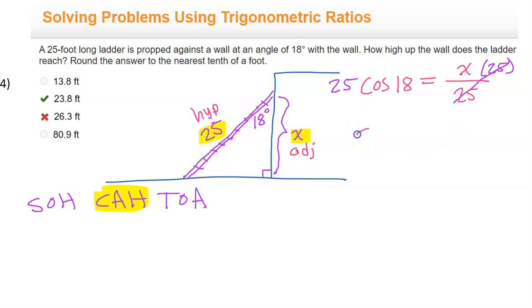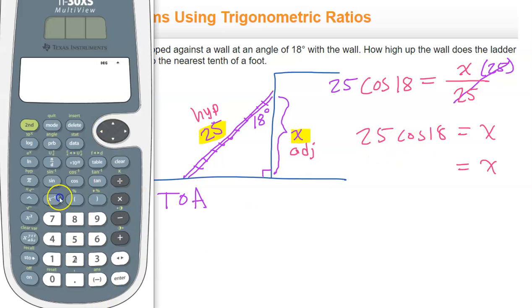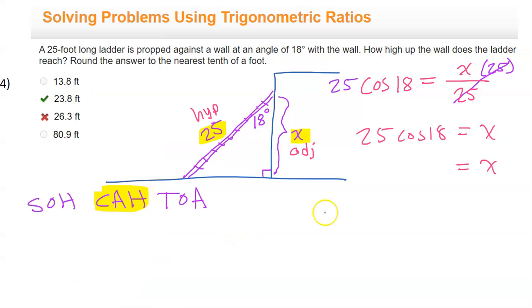So we have 25 cosine 18 equals X. This is something you can just put in your calculator: 25 cosine 18. That's 23.8 if we round up. And that's why the answer to this question was 23.8 feet.